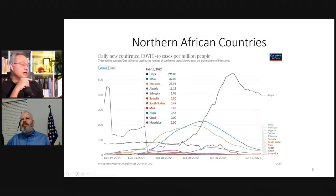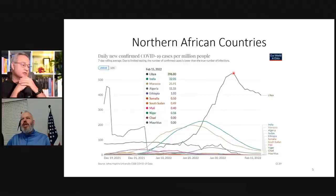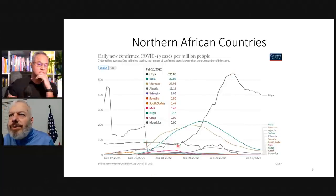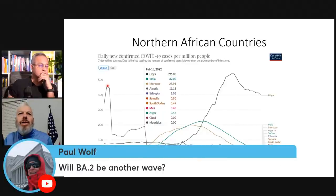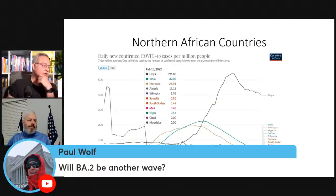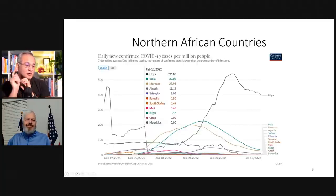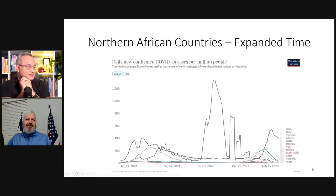Libya is at 396.8 cases per million, with a peak above 500. Here's Northwest Africa with India again as a reference. Almost all of the countries are experiencing the wave, and you can see they got the wave before India got the wave. They also have lower numbers — is that because of different diet, different reporting? I have no idea. Libya was up around 300 compared to these.